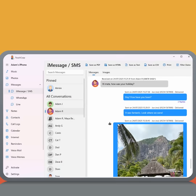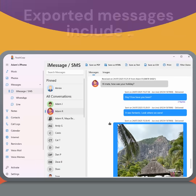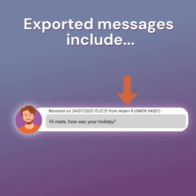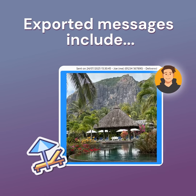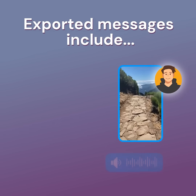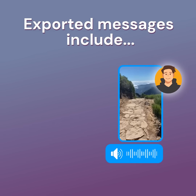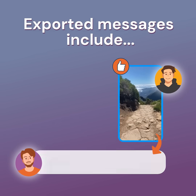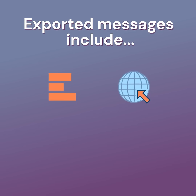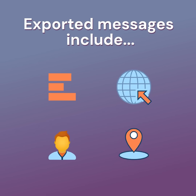TouchCopy ensures that all key information is captured, including sender's name and phone number, the date and time that the message was sent, images, stickers, and emojis, videos and audio messages, reactions and inline replies to existing messages, and other features like polls, internet links, shared contacts, and maps.